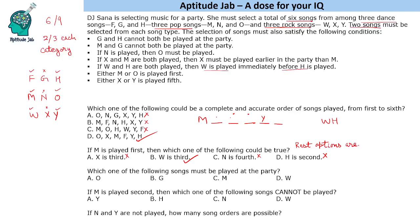Question 3: Which one of the following songs must be played at the party? In the dance category f, g, h: since g and h cannot both be played, at most one of g or h is selected, so f is compulsory — f must always be played. Now checking the pop category.